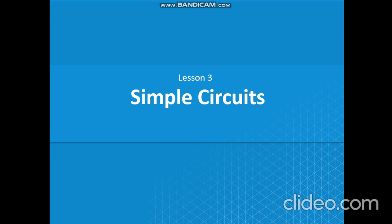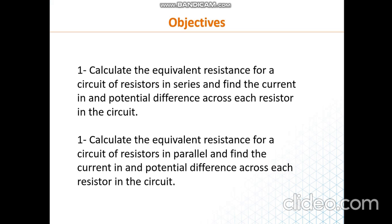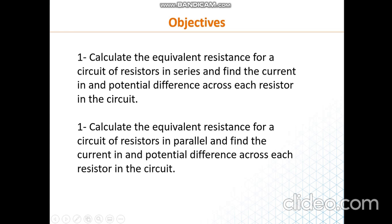Hello, Physics 2 students. Today we will be starting a new lesson, lesson 3 in module 19, Simple Circuits. Objectives for the lesson are: we will be calculating equivalent resistance for a circuit of resistors in series, finding the current and potential difference across each resistor in the circuit, and we will do the same for parallel circuits — calculating equivalent resistance and finding current and potential difference across each resistor in parallel.